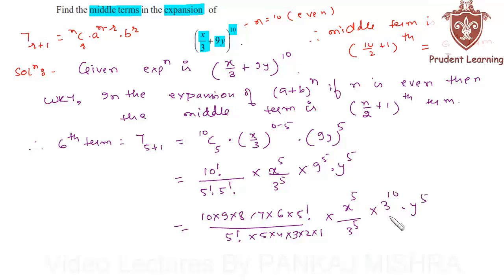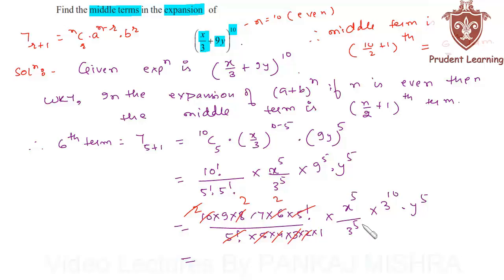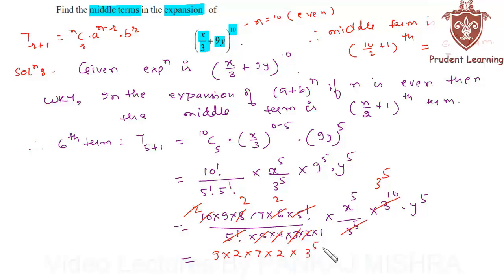Now we cancel the factorials. The 5! terms cancel. We simplify: 5×1=5, 5×2=10, cancelling common factors — 4×2=8, 3×2=6. We also cancel 3^5 from numerator and denominator, leaving 3^5 in the numerator. This gives us 9 × 2 × 7 × 2 × 3^5 · x^5 · y^5.